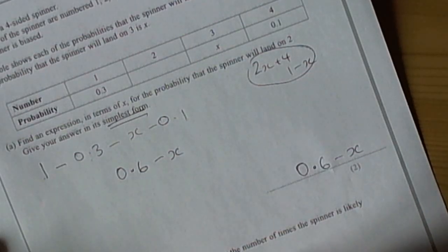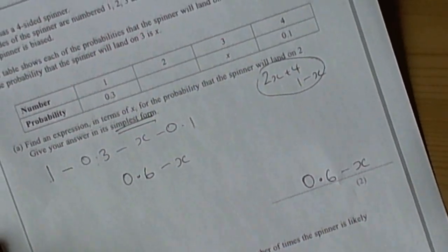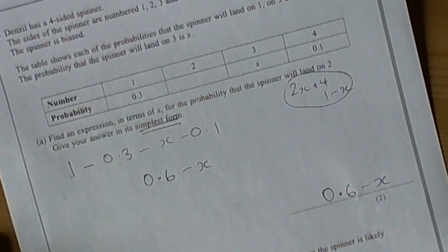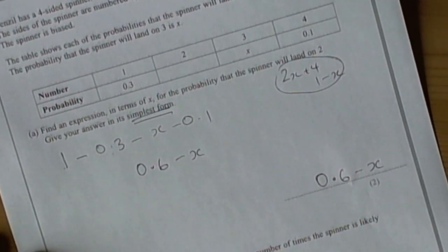And again we should always write this in simplest form, so it's going to be 300x. And that's an example of a question involving expressions in context, in this case probabilities.